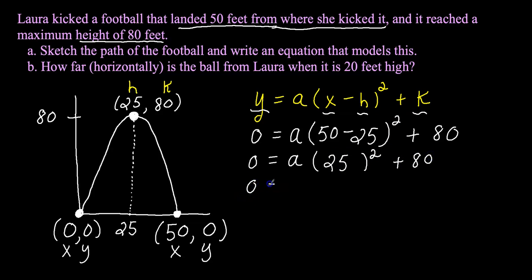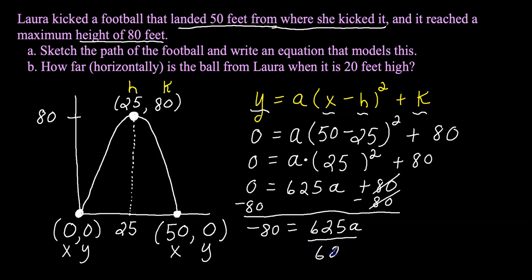Bring down this squared plus 80. Let's just keep going here. So 0 equals, well, 25 squared is 25 times 25, which is 625 times A. So this whole piece becomes 625 times this A value, plus 80. And now I'm getting close. I need to subtract 80 from both sides because I want to get the A by itself. This drops to 0, and I have 0 minus 80 is minus 80 equals 625 A. And now the last step is to divide both sides by 625.